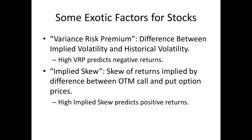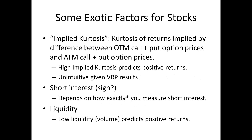We can also study the fourth moment of returns — kurtosis. The options counterpart is implied kurtosis, computed as the difference between the sum of out-of-the-money calls and puts versus the at-the-money calls and puts. If you have high implied kurtosis, it means out-of-the-money options are more expensive. Paradoxically, this also predicts positive returns: if options traders value out-of-the-money puts and calls more, it portends a better return for the stock.